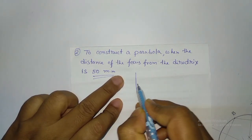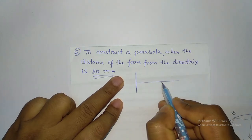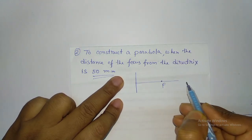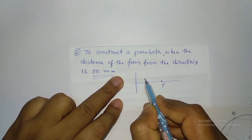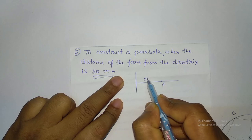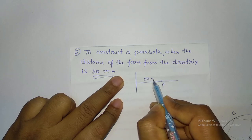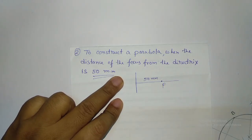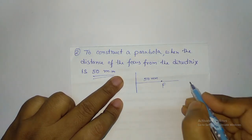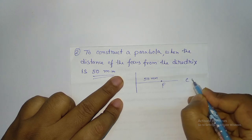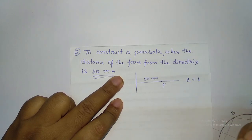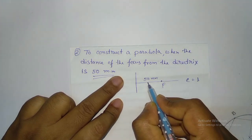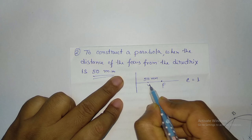Suppose this is the line, and if this is the focus, so this distance is 50 mm. For a parabola, we know that eccentricity E is equal to 1. So your point B will be at the middle.